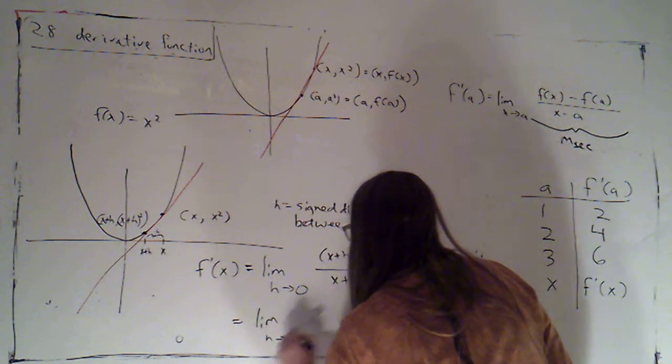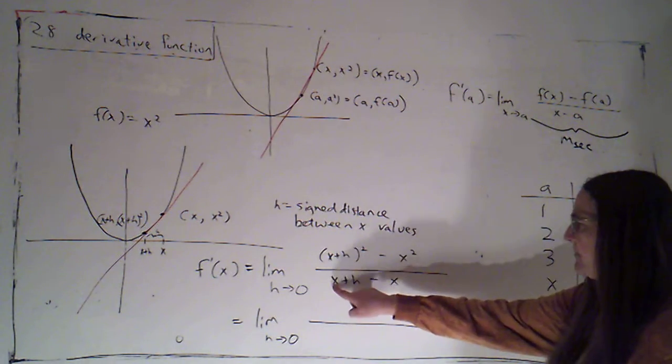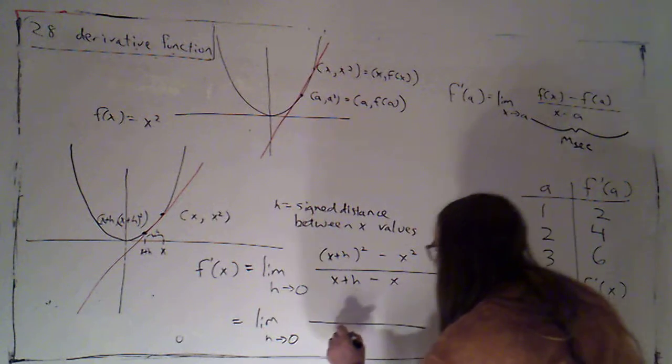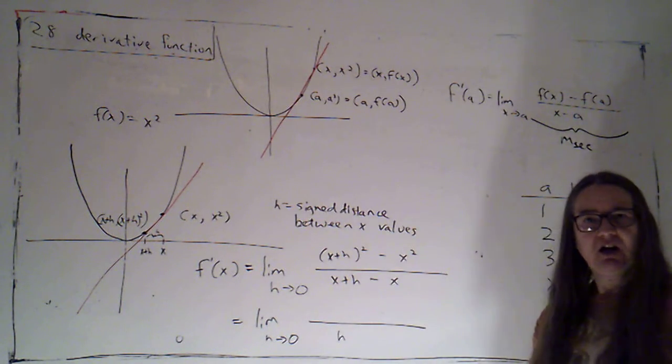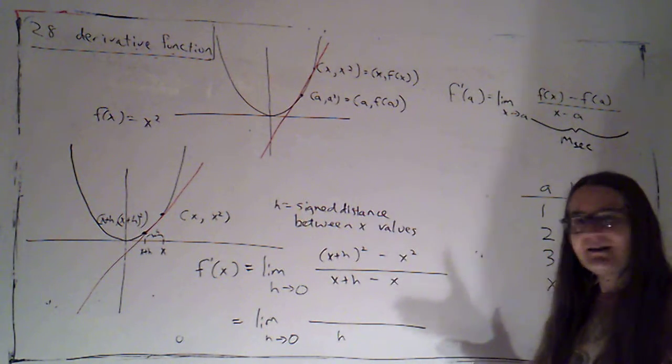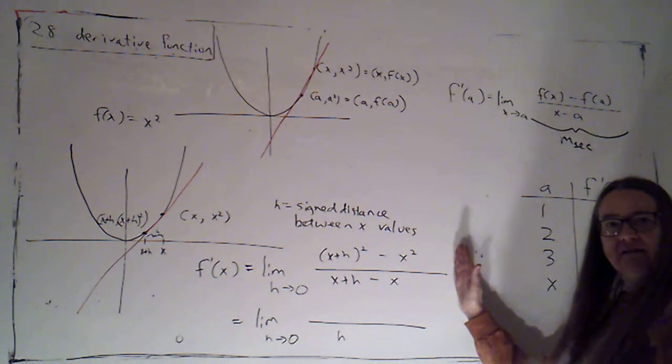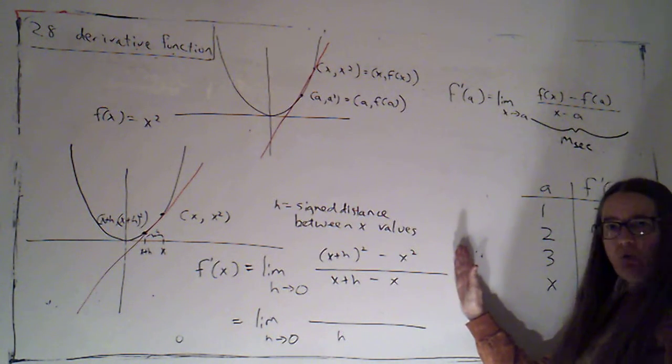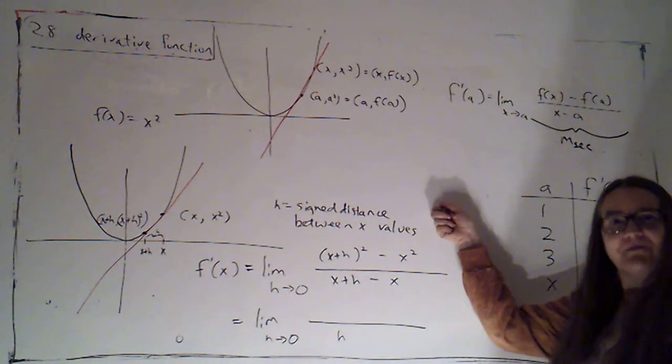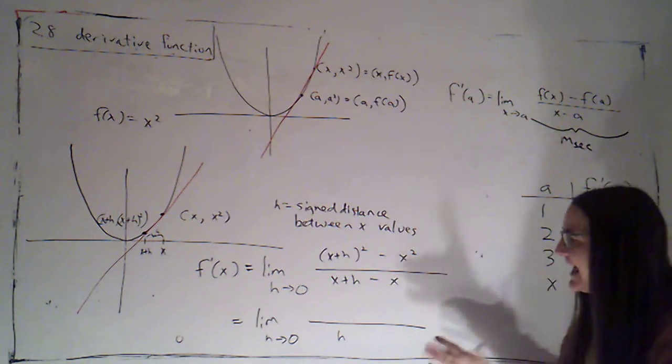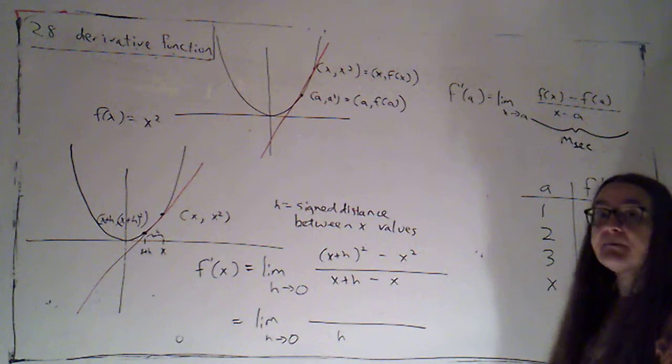Two, let's take a look at how the bottom simplifies. This is the limit as h goes to zero. On bottom, x plus h minus x is just h. Now that actually makes a lot of sense. This is supposed to be the slope of the secant line. Secant line is rise over run. What's run? It's the signed distance between the x values. So I've set it up so that h is my run.